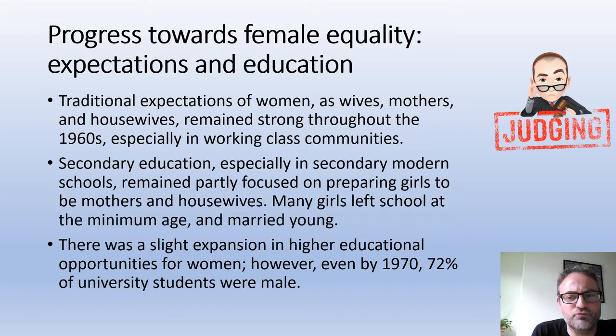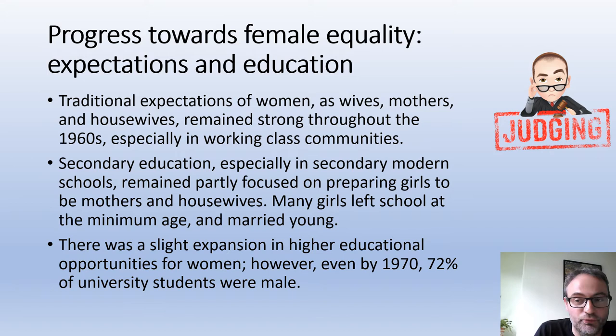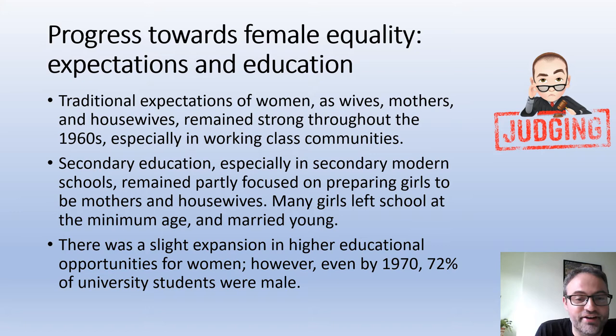Clearly girls did do academic subjects, but the stress was on preparing girls to be good mothers, wives and housewives. There was little expectation that women would go on to university or pursue a career. It's no surprise that even as we move into the 60s, quite a lot of girls left school at the age of 15 and quite a lot of them were married by the age of 19 or 21.